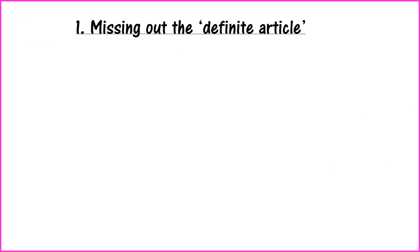Coming in at number one, we've got the missing out of the definite article. What is the definite article? It's a meta term — basically a technical term for a piece of language. Don't get confused by this: the definite article is literally just the word 'the'.